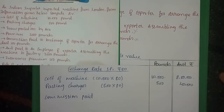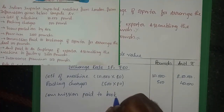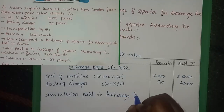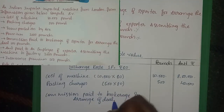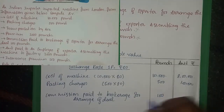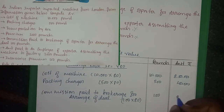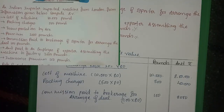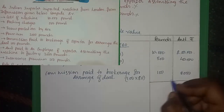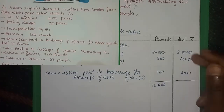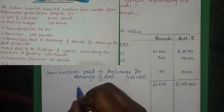Commission paid to brokerage for arranging the deal: 100 pounds. Convert: 100 × 80 = 8,000 rupees. The FOB (Free on Board) value in Indian rupees comes to 8,48,000.